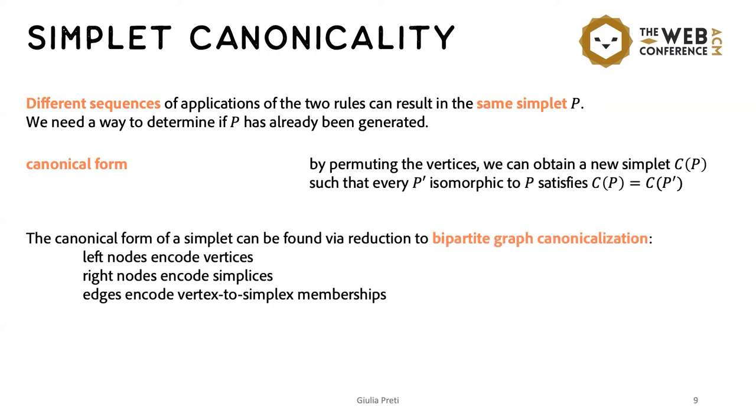However, since the literature is almost a virgin territory in the context of sub-hypergraph isomorphism, we decided to reduce the simplet canonicalization problem to a bipartite graph canonicalization. And therefore, we construct a graph where the left nodes represent vertices and the right ones represent the simplices. And then edges connect vertices to the simplices where they appear.